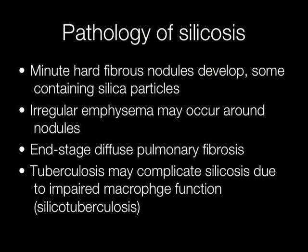In silicosis, minute hard fibrous nodules develop, some containing silica particles. Irregular emphysema may occur around the nodules. End-stage diffuse pulmonary fibrosis may also occur, and tuberculosis may complicate silicosis due to the impaired macrophage function.